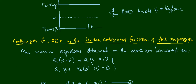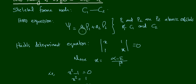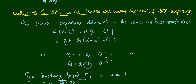The Hückel molecular orbital expression is ψ = a1·p1 + a2·p2, where p1 and p2 are the pz atomic orbitals. We are going to determine the values of coefficients a1 and a2. The secular equations from the variation treatment are: a1(α − E) + a2·β = 0, and a1·β + a2(α − E) = 0, or equivalently a1·x + a2 = 0 and a1 + a2·x = 0.